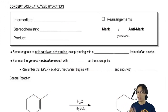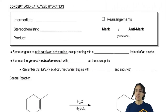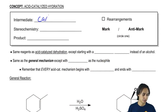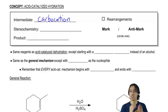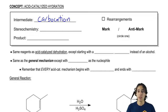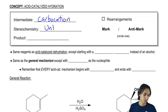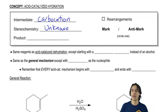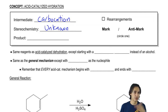Let's talk about some general features of this reaction first. The intermediate is going to be a carbocation. That means if you have a carbocation as an intermediate, your stereochemistry has to be unknown. The reason for that is that if you have a carbocation, it could be attacked from either side.